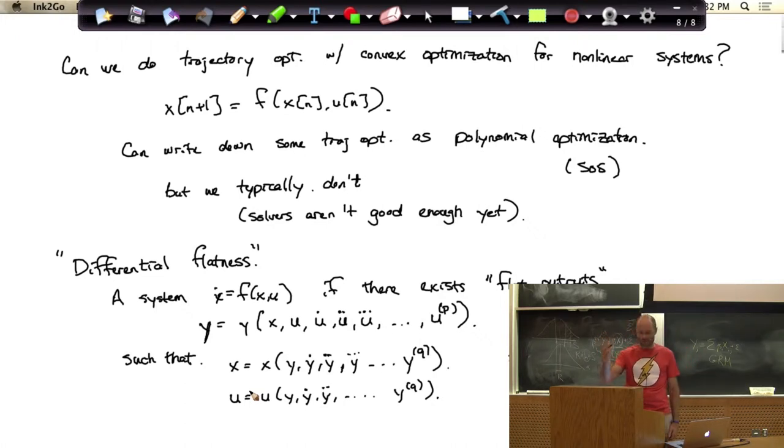So for the quadrotor example, the famous example now is the quadrotor. It turns out the flat outputs are the x, y, z position of the quadrotor and the yaw angle of the quadrotor. If you tell me the x, y, z trajectory of the quadrotor and its yaw, then there's only one set of states that the quadrotor could have possibly gone to satisfying the dynamics that would have achieved that x, y, z and yaw.